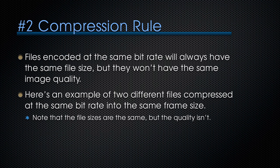The second compression rule is that files encoded at the same bitrate will always have the same file size — always. But they won't have the same image quality. Let me show you an example of two different files compressed at the same bitrate into the same image frame size. You'll note that the file sizes are the same, but the quality isn't.